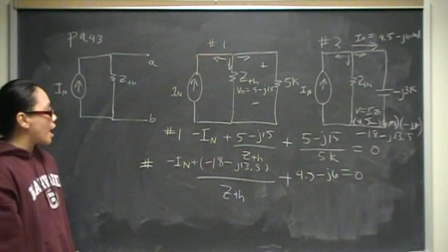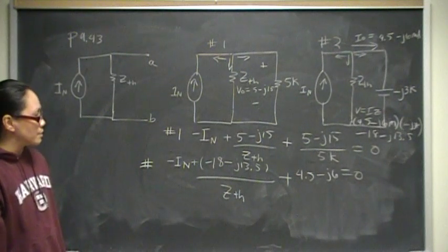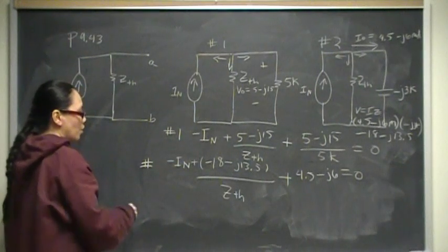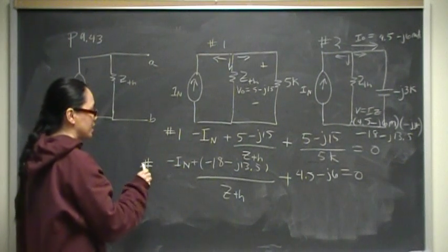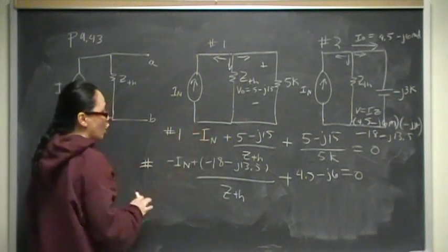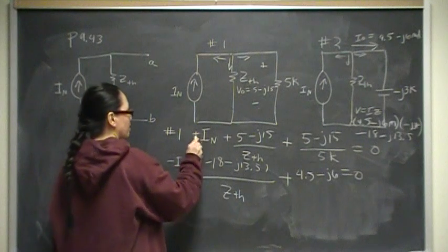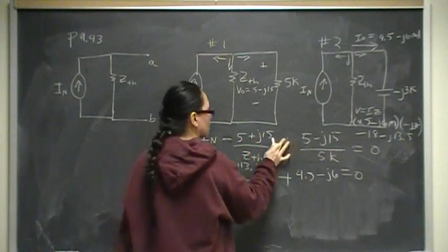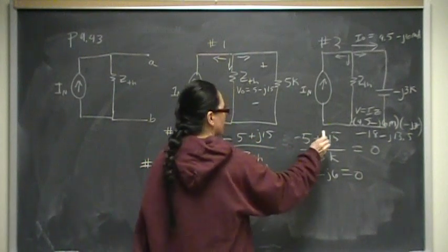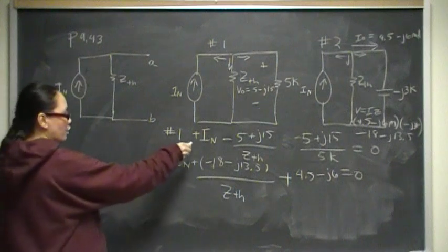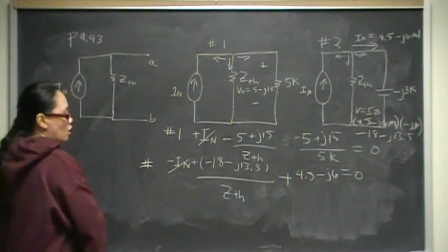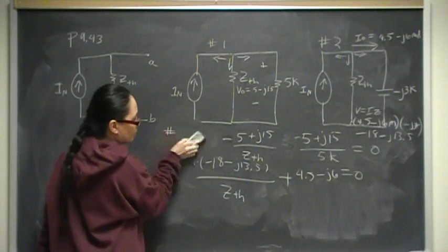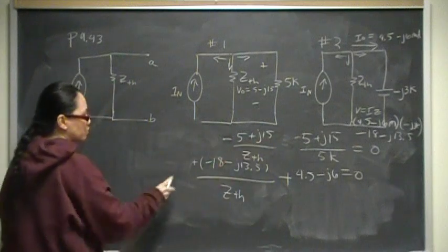Our two unknowns are I Norton and Z-Thevenin. We have I Norton here and I Norton here in equation one. We can subtract one from the other. I'm going to take subtract one from two, so that means the signs will change. This becomes minus 5 plus 15. And then when I add them together, the I Nortons cancel out. My new equation is equation one plus equation two.